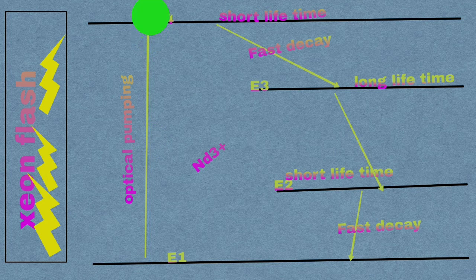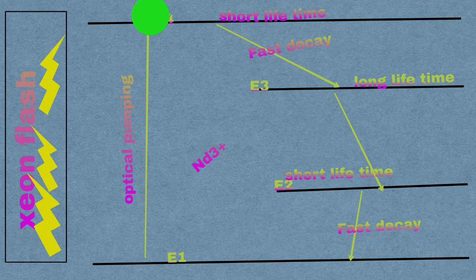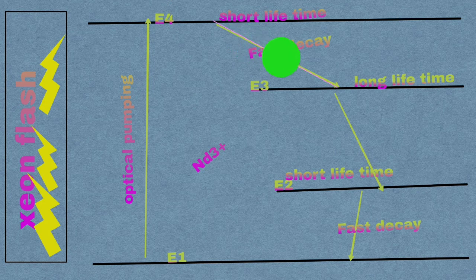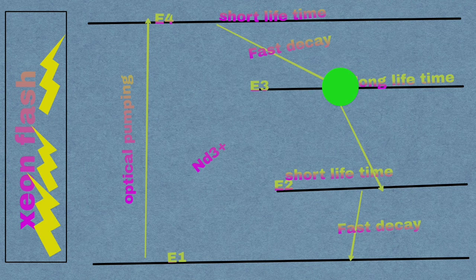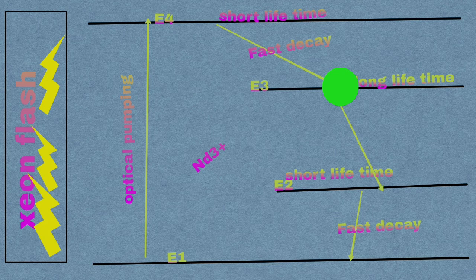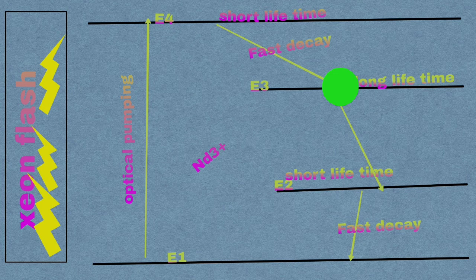The excited Nd3+ ions then make a transition from these energy levels. In the excited state E4, the lifetime of Nd3+ ions is very short so it de-excites into E3 state through non-radiative transition. In E3 state the lifetime of Nd3+ ions is large, so it acts as metastable state. In metastable state the Nd3+ ions remain for longer duration of the order 10 to the power minus 3 seconds.